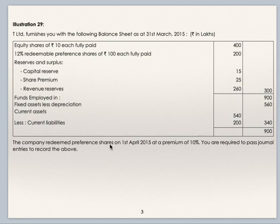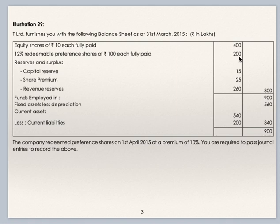The company redeemed preference shares on 1st April 2015 at a premium of 10%. You are required to pass journal entries to record the above. The company is redeeming preference shares at 10% premium, so 10% of 200 is 20 rupees. So 200 plus 20 equals 220 — preference shareholders are entitled to get 220. The 20 premium on redemption of preference shares can be taken from the securities premium account. There is no fresh issue of shares, so the nominal value of shares to be redeemed, which is 200, gets transferred to CRR from revenue reserve.